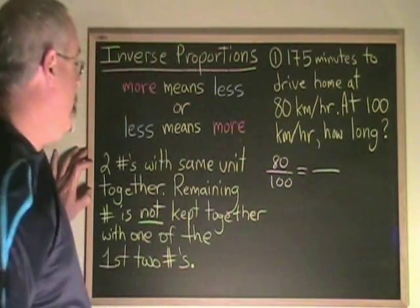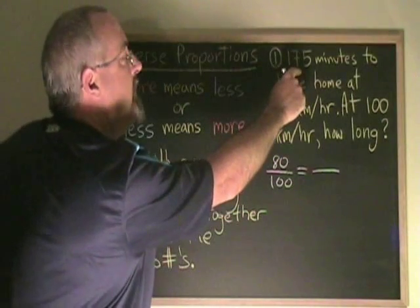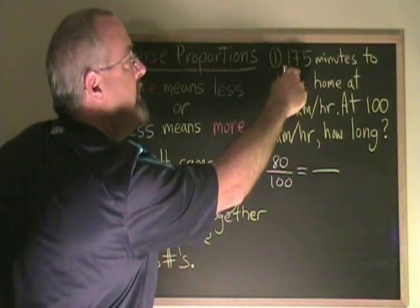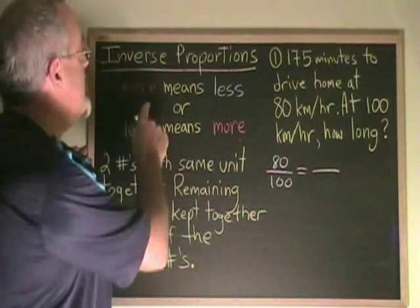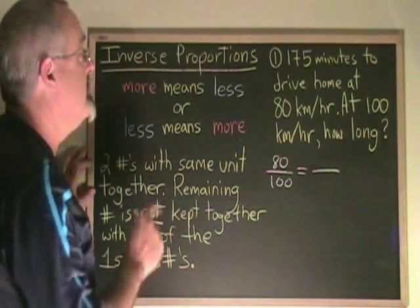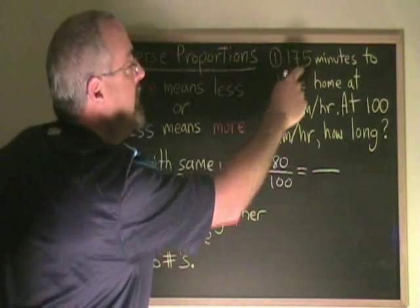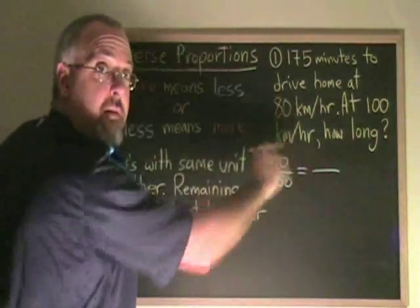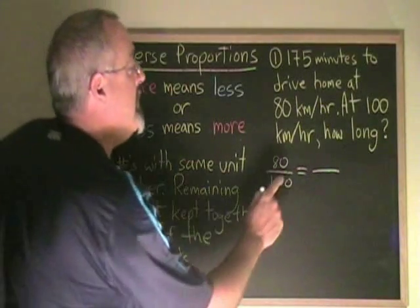Then I look for the remaining number and I see 175 minutes. The 175 minutes goes with the 80 kilometers per hour in this situation. But because this is a more-means-less situation and it is not a direct proportion, it is an inverse proportion, instead of keeping the 175 and the 80 together in my equation, I deliberately break that rule and I keep them apart.